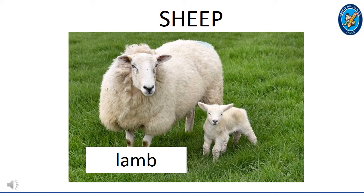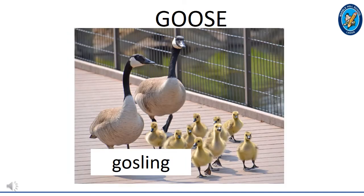This is a sheep, and the young one of a sheep is called a lamb. How many lambs can you see on the screen? One — there is one lamb on the screen. These are geese. The young one of a goose, which is the singular form of geese, is a gosling. How many goslings can you see on the screen? Let's count together: one, two, three, four, five, six, seven, eight, nine. There are nine goslings on the screen and two geese on the screen as well.